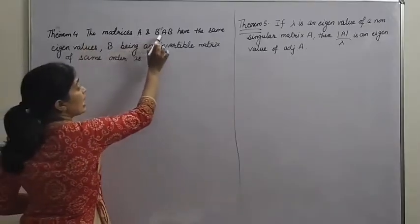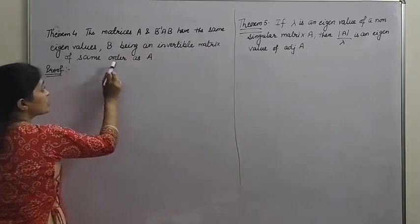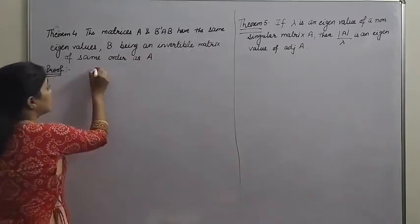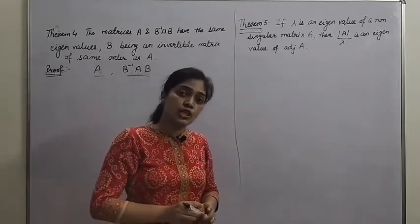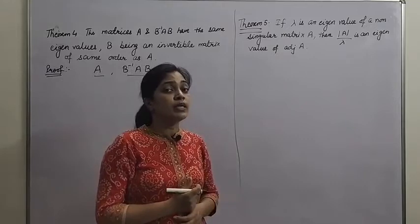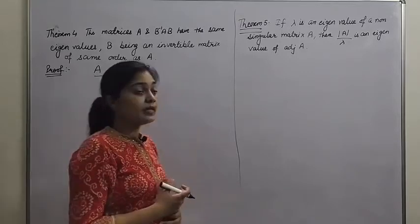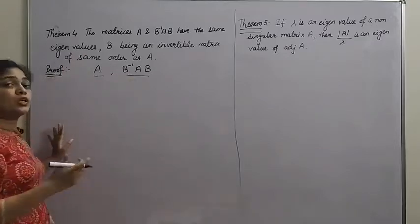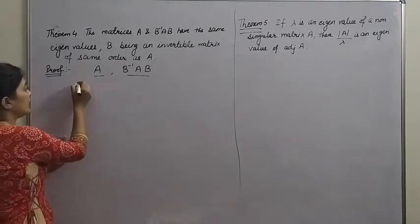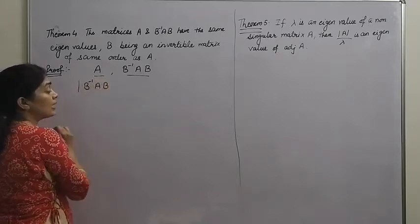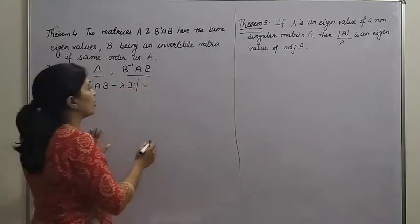Now let us prove that matrices A and B⁻¹AB have the same eigenvalues, where B is an invertible matrix of the same order as A. What we have to prove is that matrices A and B⁻¹AB have the same characteristic roots (eigenvalues), where B is invertible (i.e., non-singular). To show that two matrices have equal eigenvalues, we show that both have the same characteristic polynomial. So we find the characteristic polynomial of B⁻¹AB, which is det(B⁻¹AB - λI).